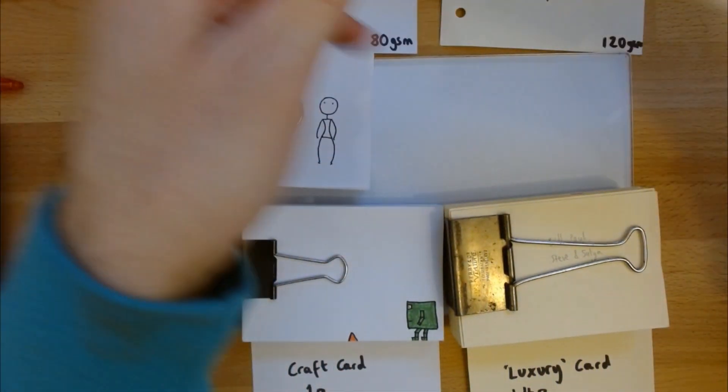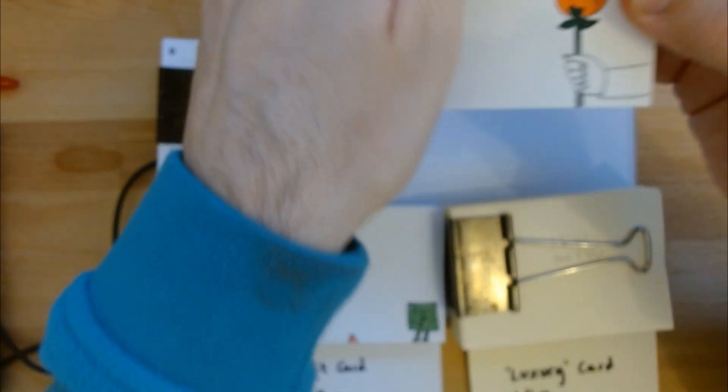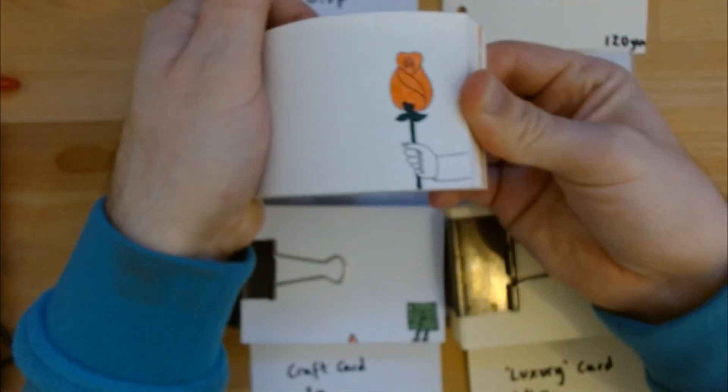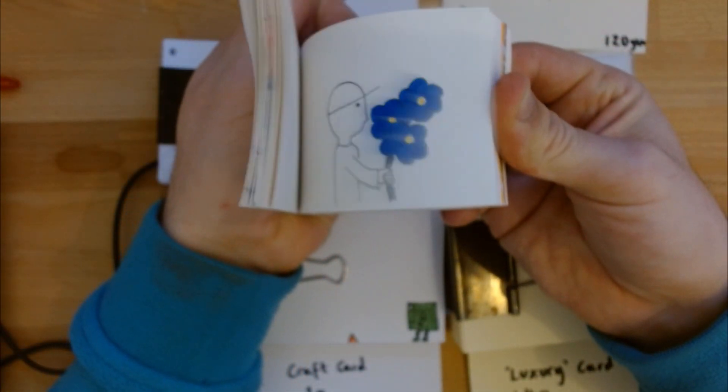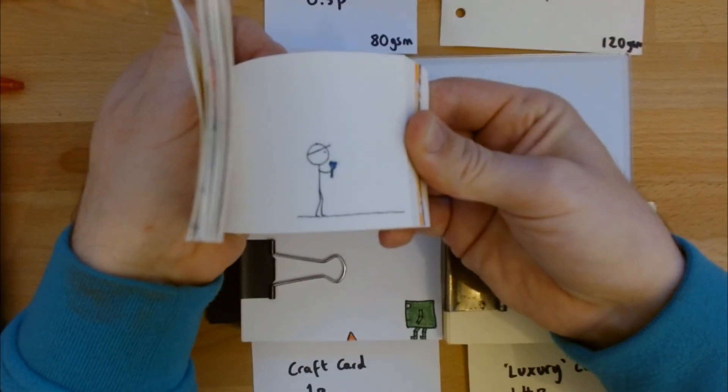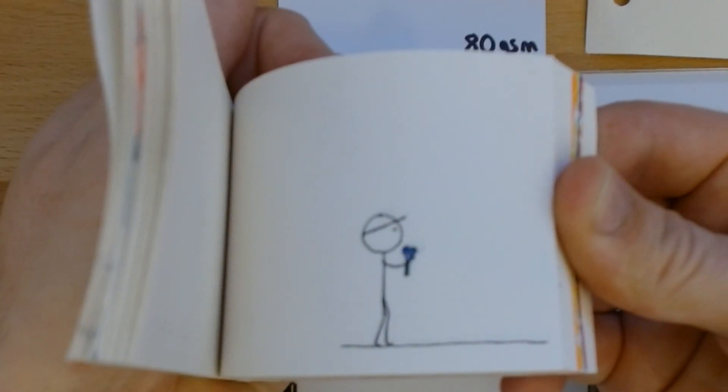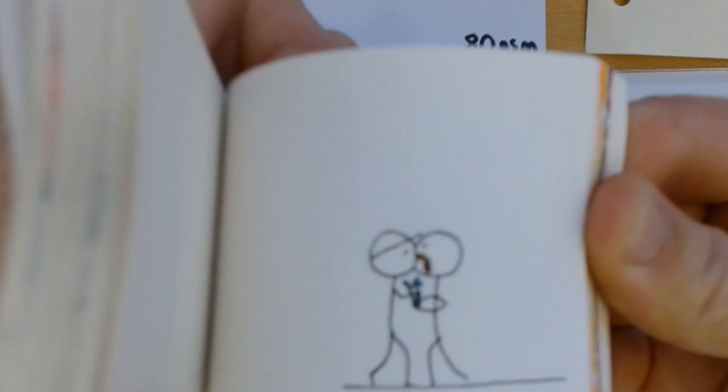Now this is the 120 gsm, so it's half again as thick. And you can see how much nicer, it's a bit blurry, but how much nicer the image is.